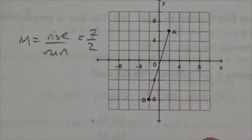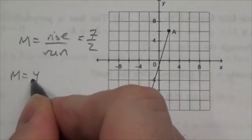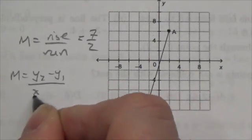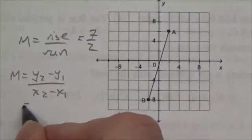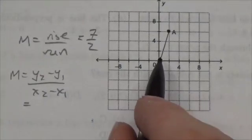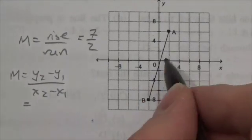Or we could use our formula which is y2 minus y1 over x2 minus x1, and then we use the coordinates of A. In this case that's going to be, what have we got here, it's going to be